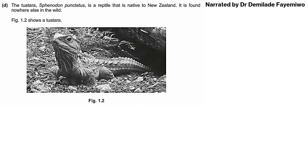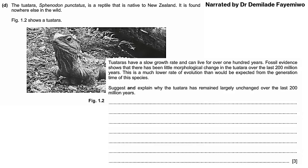Question 1d: The Tuatara, Sphenodon punctatus, is a reptile native to New Zealand — found nowhere else in the wild. They have a slow growth rate and can live for over 100 years. Fossil evidence shows there has been little morphological change in the Tuatara over the last 200 million years, a much slower rate of evolution than would be expected from the generation time. Suggest and explain why the Tuatara has remained largely unchanged over the last 200 million years. This question is linked to the previous ones — the theory of evolution says organisms change over time in response to natural selection pressures.